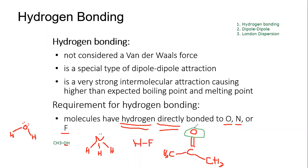The reason it has to be one of those three elements is that, as we discussed in earlier chapters, electronegativity plays a role. Oxygen, nitrogen, and fluorine are the three most electronegative elements on the periodic table, and that's why the hydrogen has to be directly attached to one of those three elements.